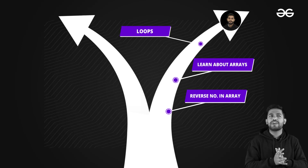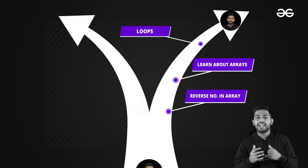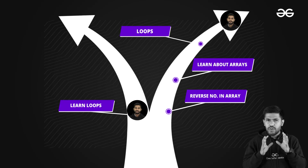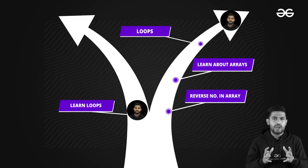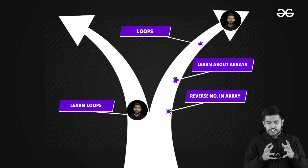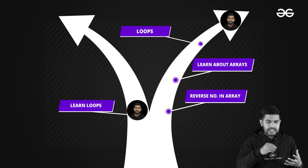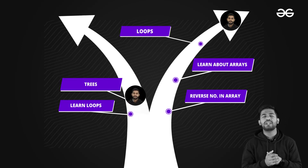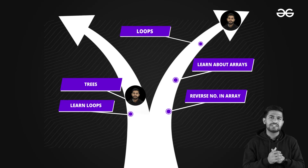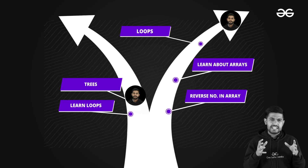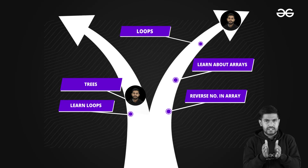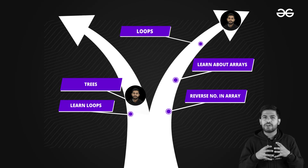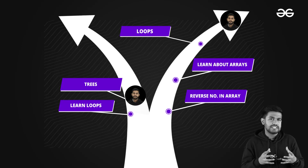Let me tell you what happens if you follow the wrong path. Suppose today you are learning loops by watching video lectures or reading articles. In the next three days you move to trees, and in the next three days to segment trees and Fenwick trees. This path is too compressed.